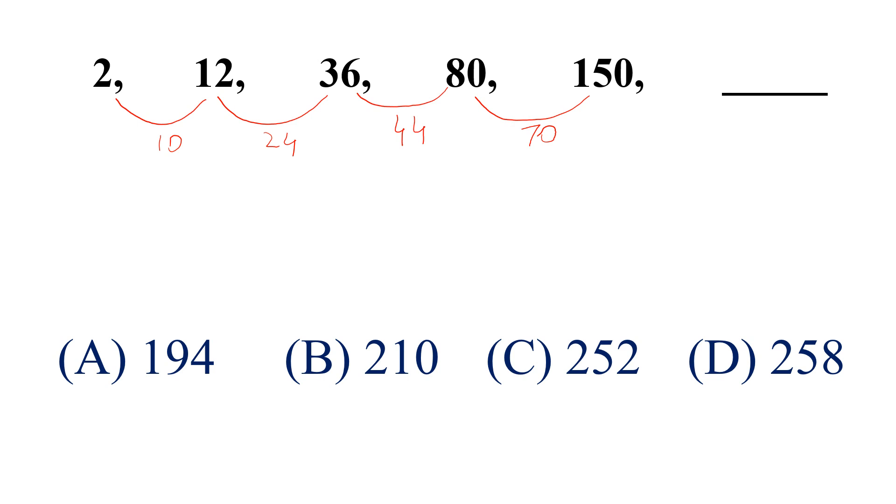Now we calculate the difference of these differences. So, 24 minus 10, this is 14. 44 minus 24, this is 20. And 70 minus 44, this is 26.